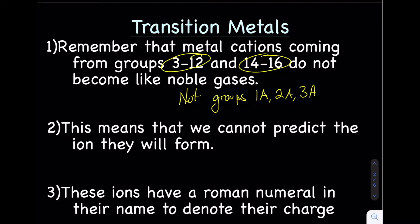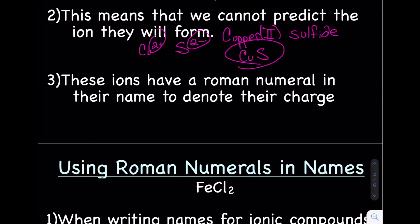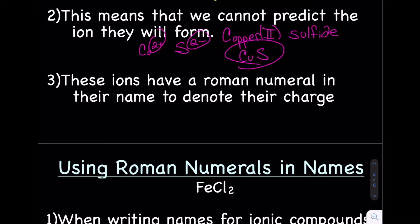So here's what I like to think. Instead of saying that, I like to say that metals coming from not groups 1A, 2A, or 3A. So any metal coming from groups 1A, 2A, or 3A do not get Roman numerals. Any other metal needs to have a Roman numeral.